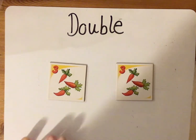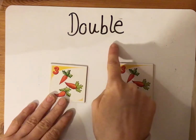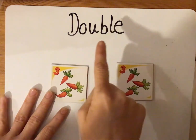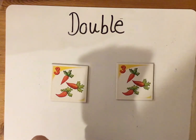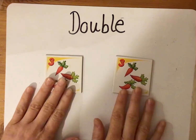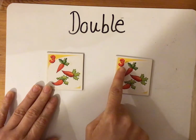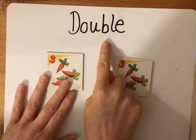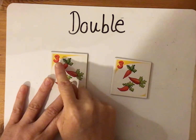Today we have some new learning and our new learning is all about this word which is double. Can you say that word? Double. Now double, listen very carefully. If we double a number it means that we add the same number again. I'm going to say that again — if we double a number it means we add the same number again.